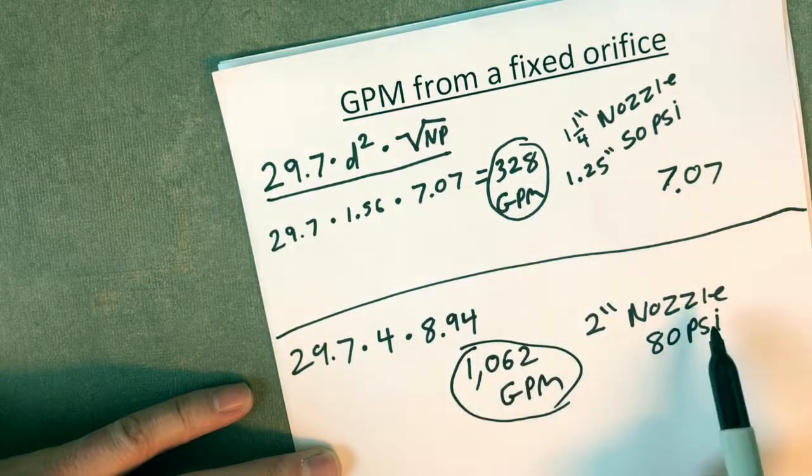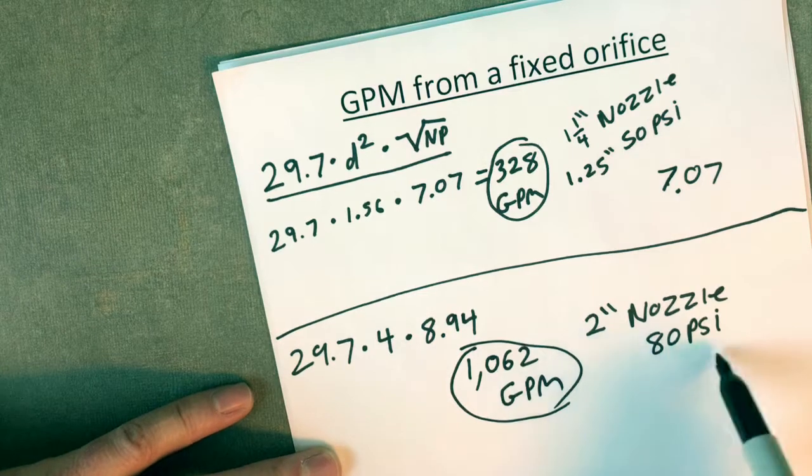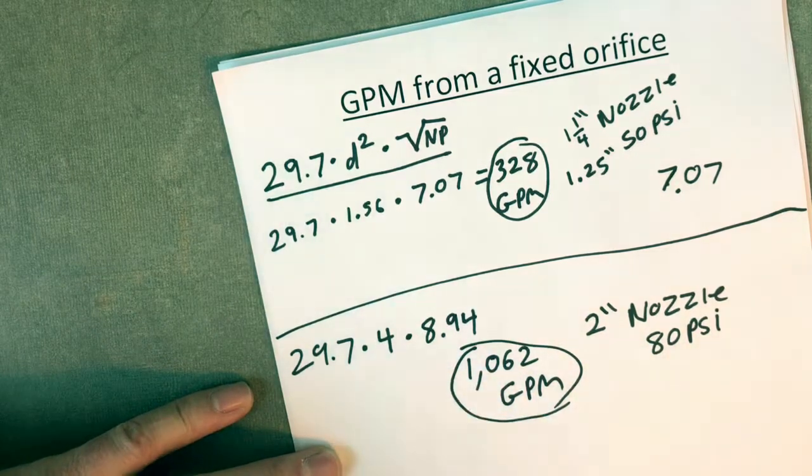It's a big tip on the monitor flowing at the prescribed pressure, going to give you 1062 gallons a minute.